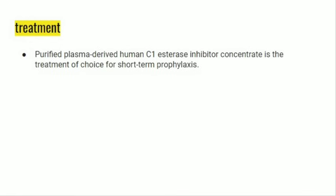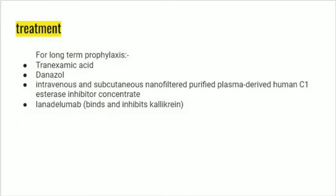For short-term prophylaxis, purified plasma-derived human C1-inhibitor concentrate is used. For long-term prophylaxis, the following four drugs can be used: Number 1 - tranexamic acid; Number 2 - danazol, which is a synthetic steroid; Number 3 - IV and subcutaneous nano-filtered purified plasma-derived human C1-inhibitor concentrate; Number 4 - lanadelumab, which is a monoclonal antibody that binds and inhibits plasma kallikrein of the contact system.